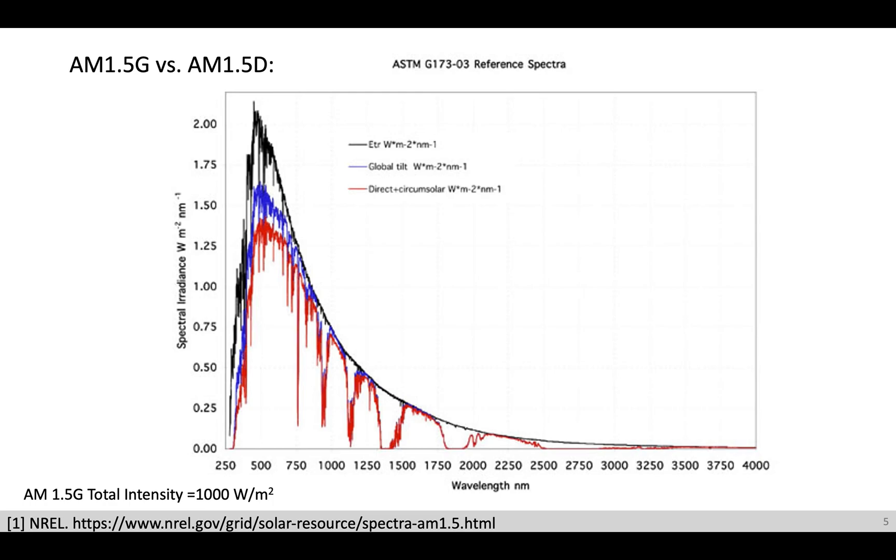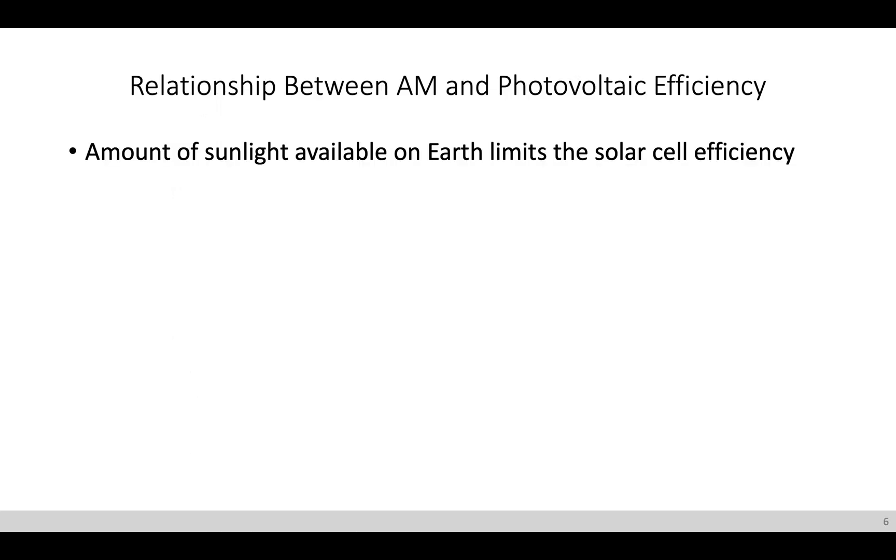And so with this spectra, it's important to understand how this relates to understanding the solar cell efficiency. And so since a solar cell absorbs available sunlight into the cell and then converts it into electricity, the amount of sunlight available will put an upper limit to the solar cell efficiency. And so to determine the theoretical limit to a single junction solar cell efficiency, also known as the detailed balance limit, we can derive this limit with two methods.